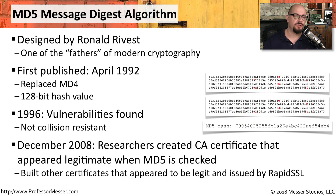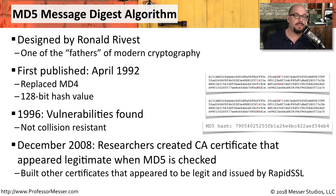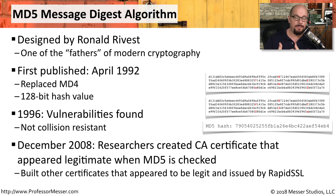In 2008, researchers were able to build a certificate that appeared to be from a certificate authority, but was not a legitimate CA certificate. If you checked it with MD5, it appeared that the certificate was legitimate. Because of these vulnerabilities, researchers were able to create certificates that appeared to be issued by RapidSSL. This is just one of the reasons why you'll no longer see MD5 used for things like web server certificates.